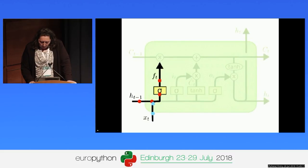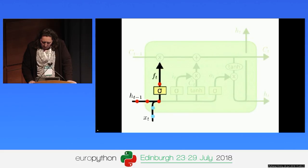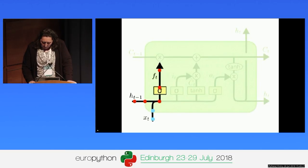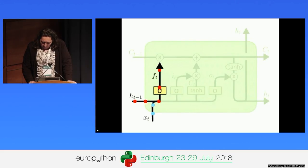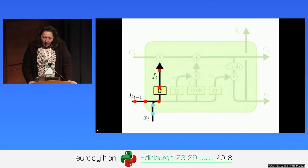Gates are a way of optionally remembering or forgetting information, composed of a sigmoid neural net layer and a pointwise multiplication operation. The first step in our LSTM is to decide what information we're going to throw away from the cell state. This decision is made by the sigmoid layer — the forget gate layer. It looks at T minus one, one step in the past, and inputs a number between zero and one to decide how much to forget and how much to remember. A one represents completely keep, and a zero means completely forget. The cell state may, for instance, remember the name of the present subject, and when it finds a new subject it may throw away the old one.